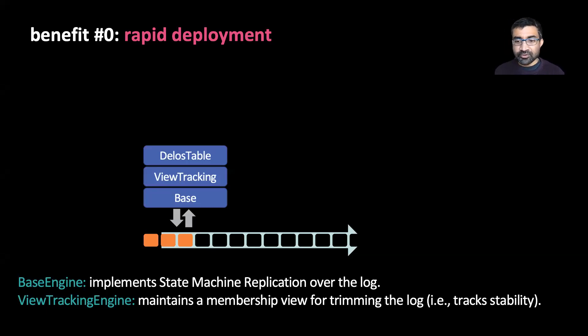So that's what a log-structured protocol looks like. I'm now going to describe the different log-structured protocols we built. When we first deployed Delos table, we structured it as a collection of just two protocols. We had the base engine, which implements the state machine replication API over a shared log, and a view tracking engine. Now the job of the view tracking engine is to trim a prefix of the log once all nodes have played it. The state it maintains is the playback position of each node. So in a sense, we're using the log itself to track the set of nodes that are playing it.